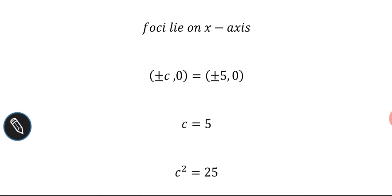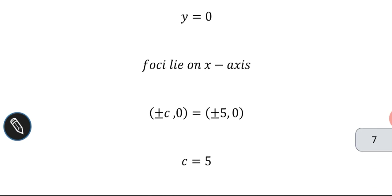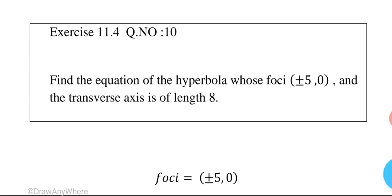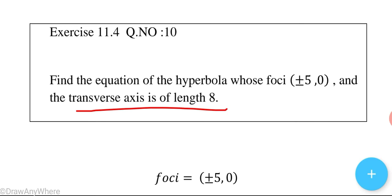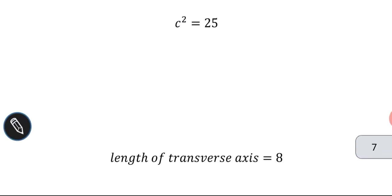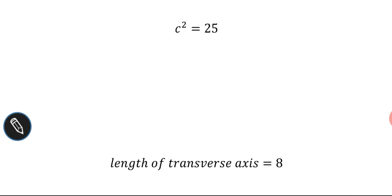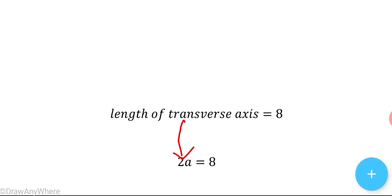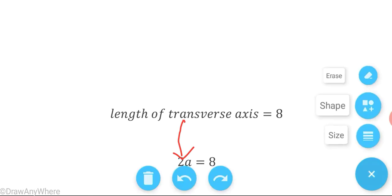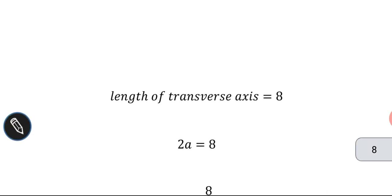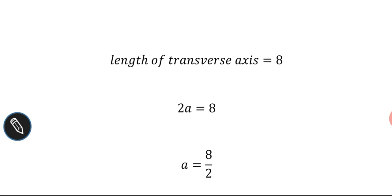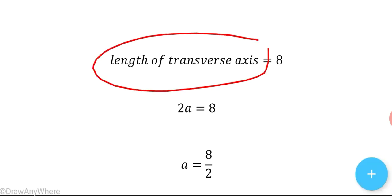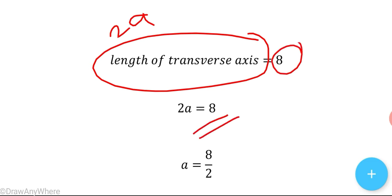So c squared is equal to 5 squared, which is equal to 25. Also given, the transverse axis is of length 8. The length of the transverse axis is 2a, which is equal to 8. So a is equal to 8 divided by 2, which gives a equal to 4.